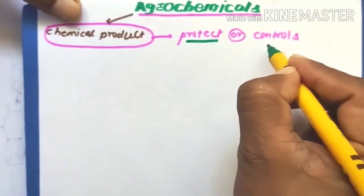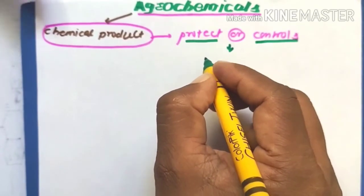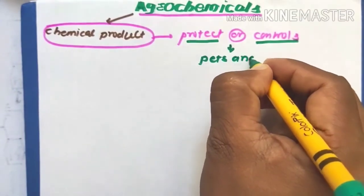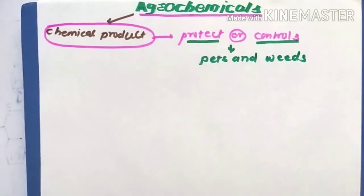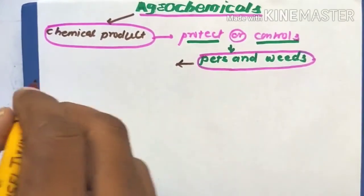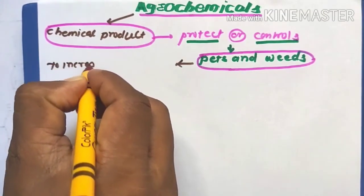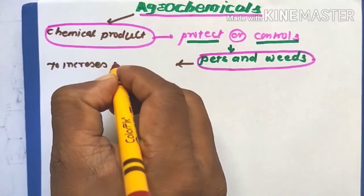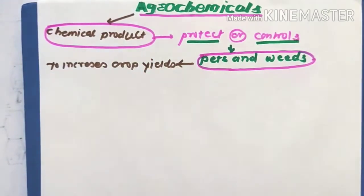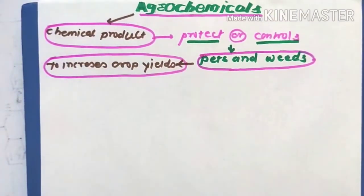Agrochemicals are chemical products used to protect or control crops from pests and weeds, to increase or enhance crop yield. This is mainly used to increase crop yield.